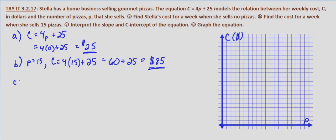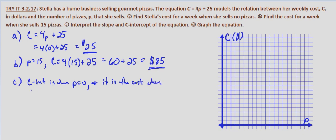With part C we're asked to interpret the slope and C-intercept of the equation. The C-intercept is when P equals zero. We already did that in part A — it is the cost when Stella sells no pizzas.